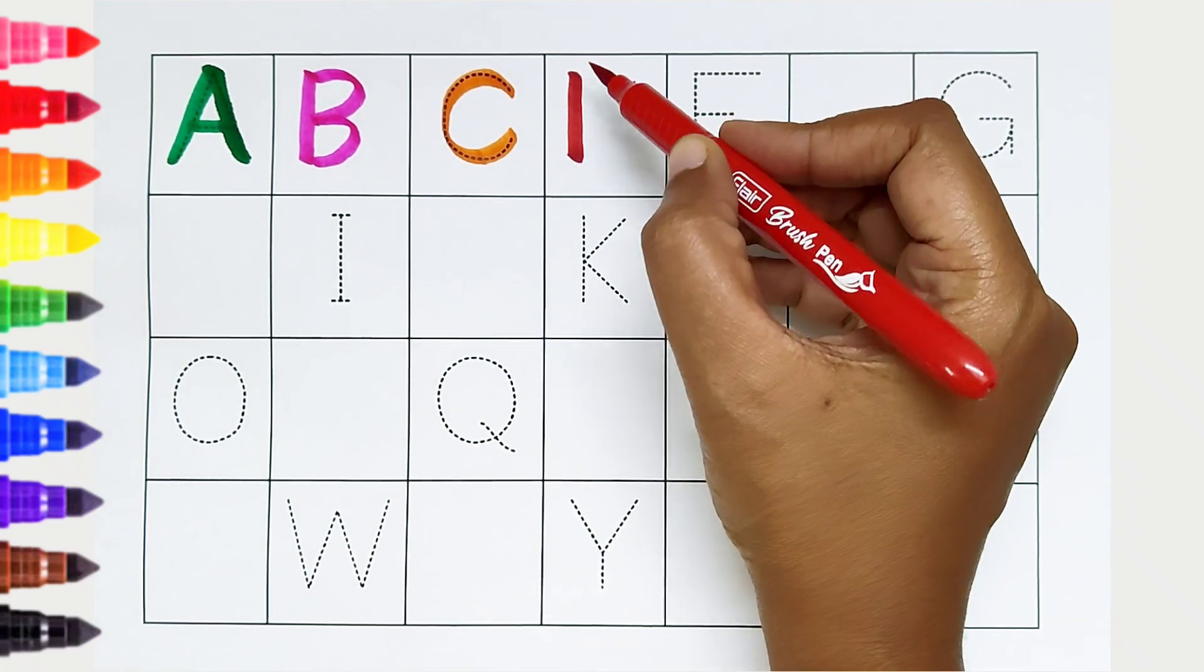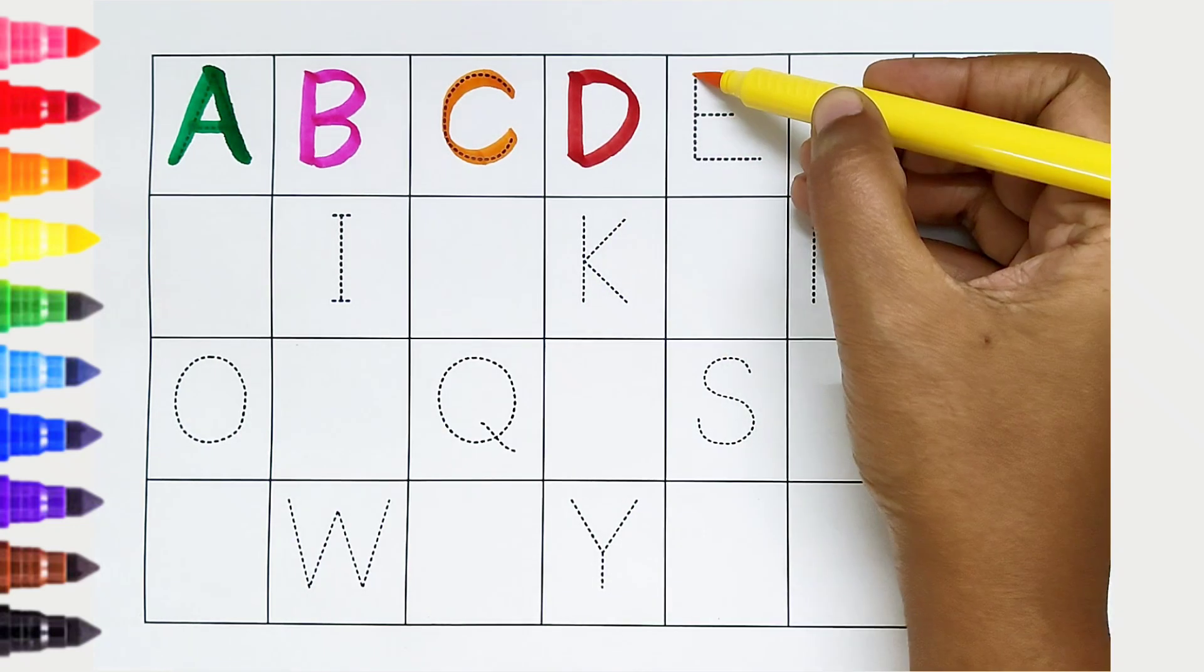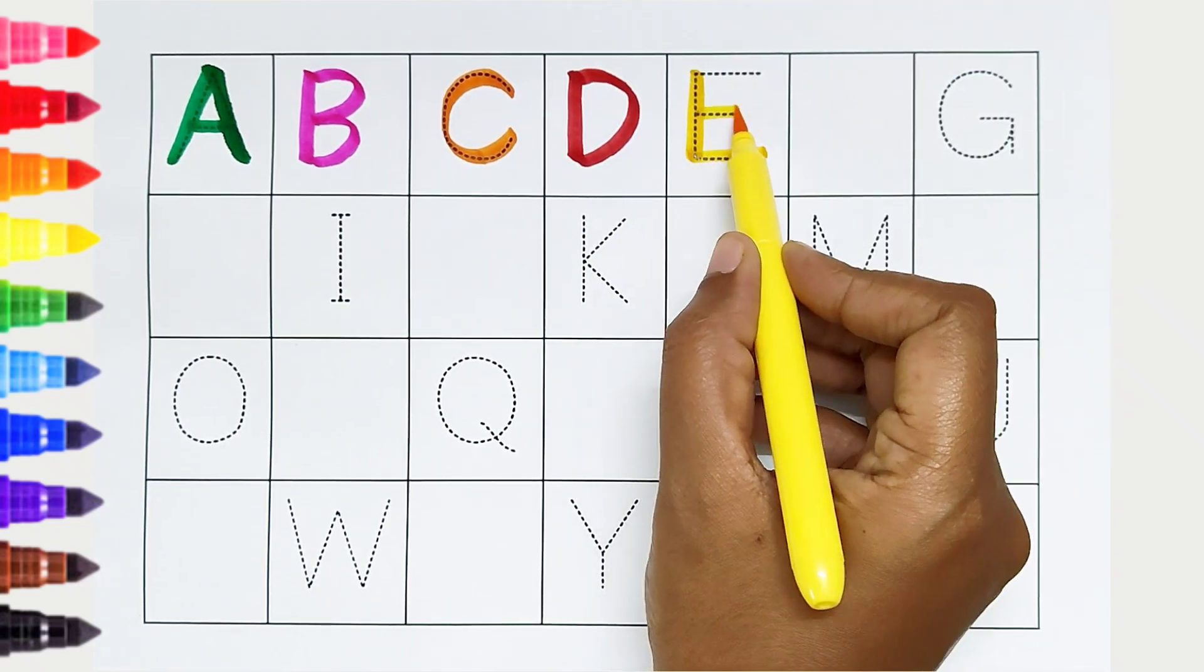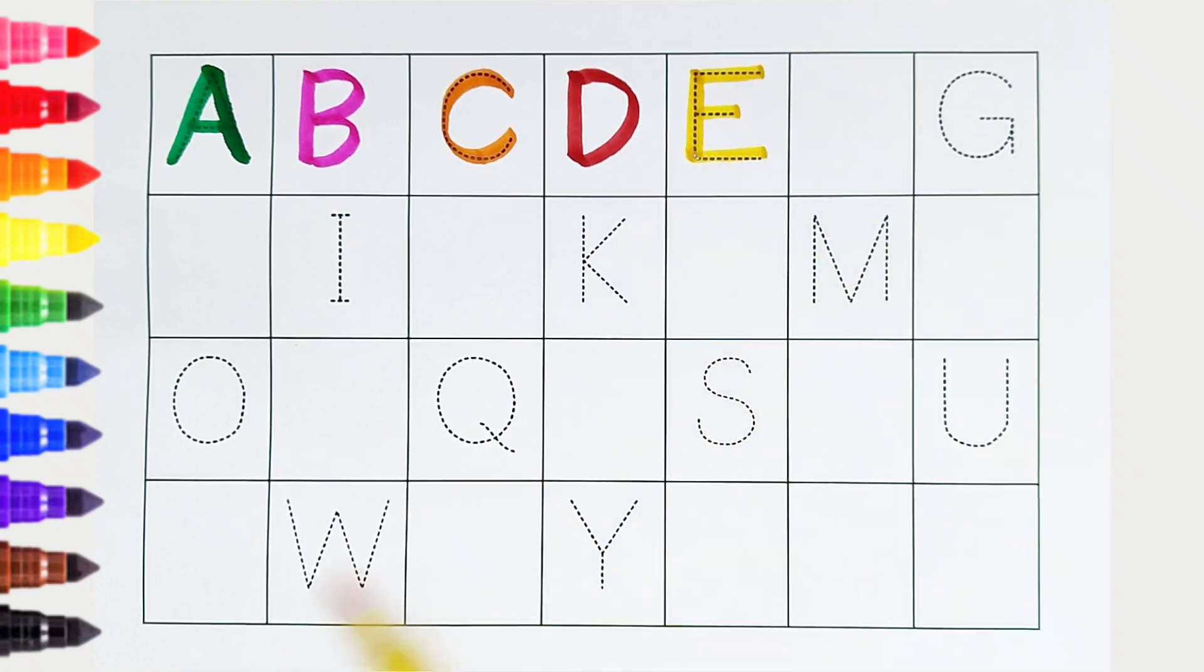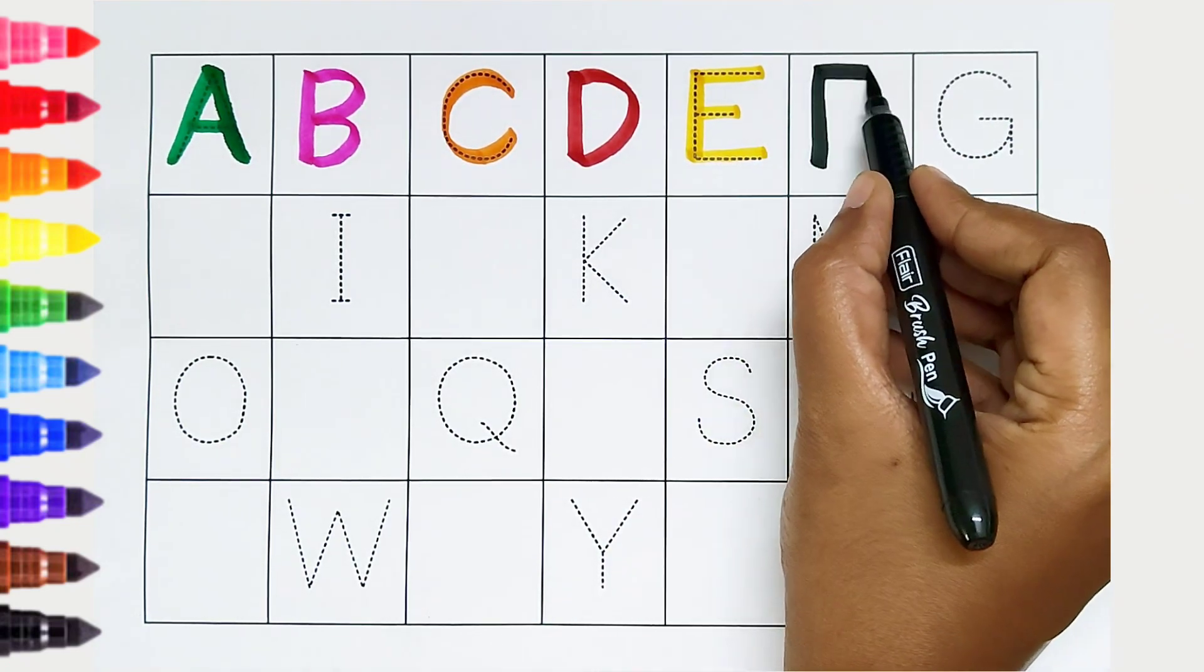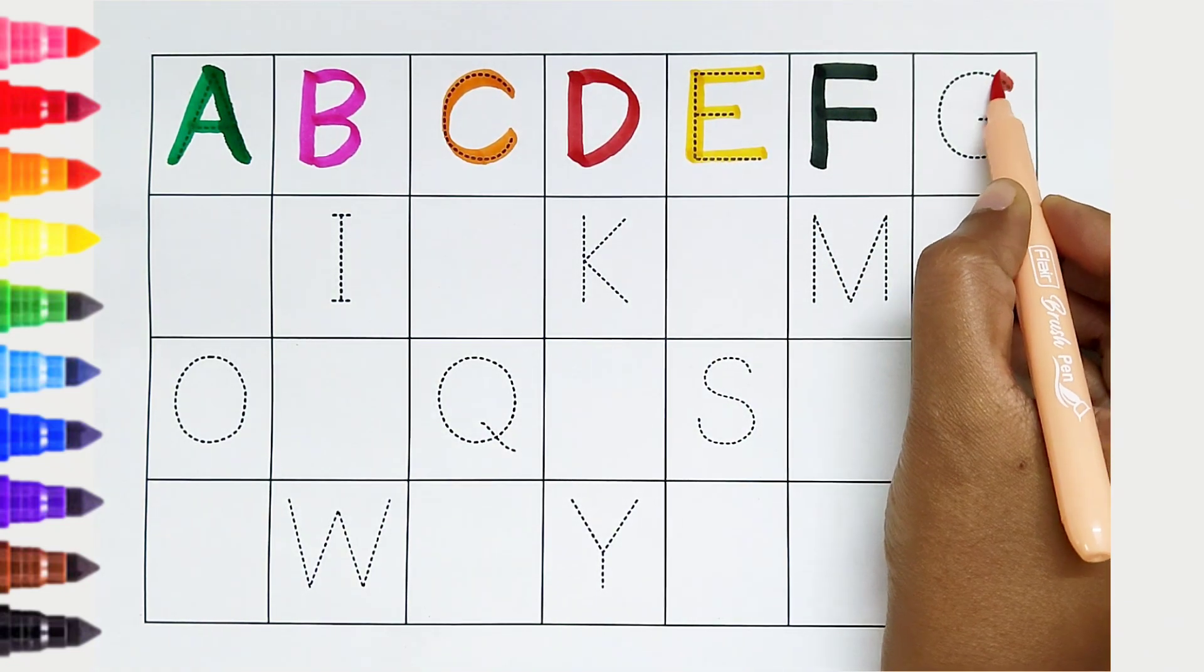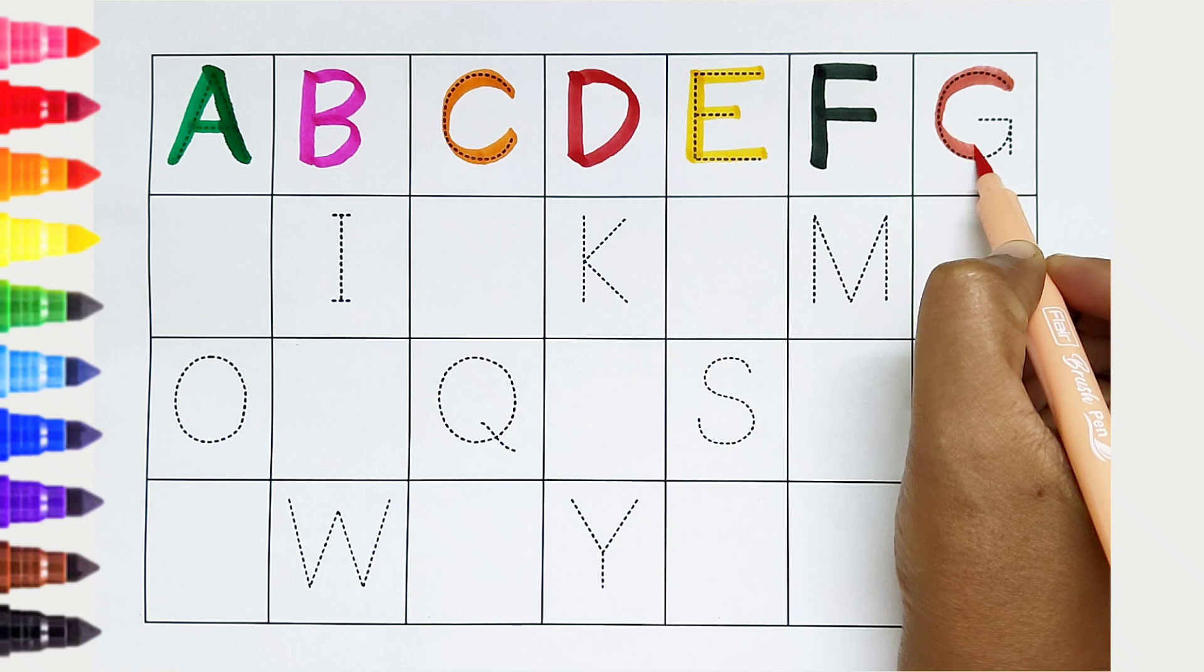D, red color, D is for donkey. E, yellow color, E is for eagle. F, black color, F is for fan. G, light pink color, G is for gorilla.